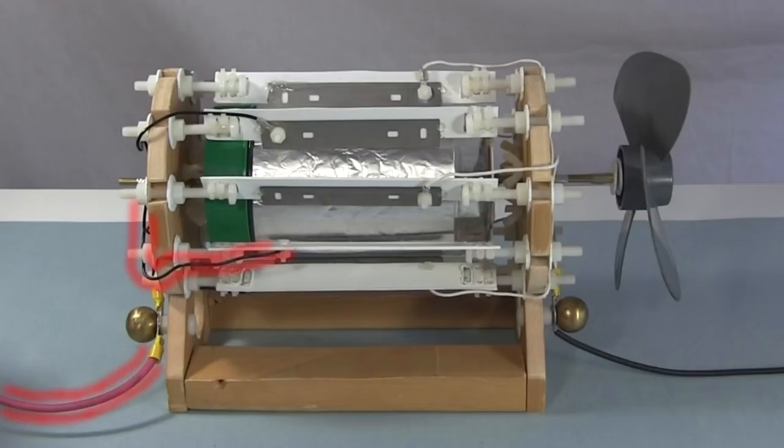So they alternate: high voltage, ground, high voltage, ground, and so on. Alternately, these could go to high voltage positive and these to high voltage negative.